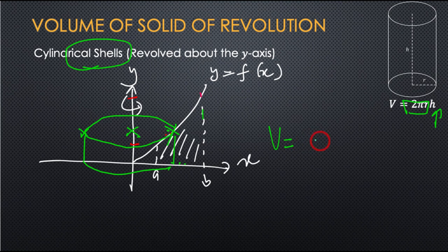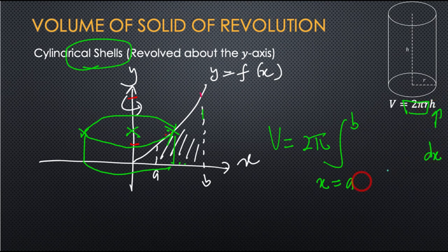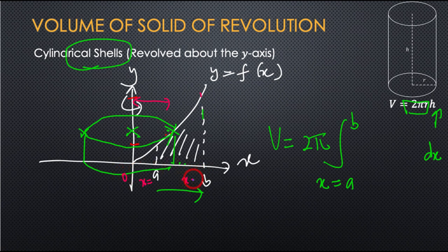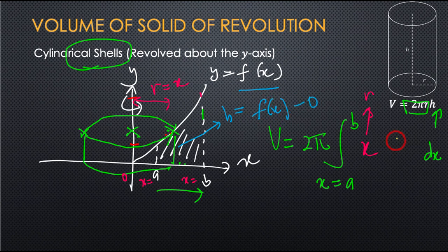So the volume is 2π, from a to b. You don't have to change anything. The radius r and height h: the x because you move from a to b. The radius is from the Y axis to the function — you read x=a, x=0, x=b, so at this point the radius is x. For the height, the top is f(x) and the bottom is 0, so it is f(x) minus 0, giving f(x).